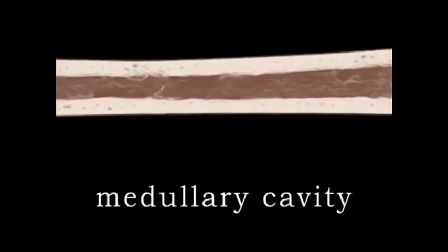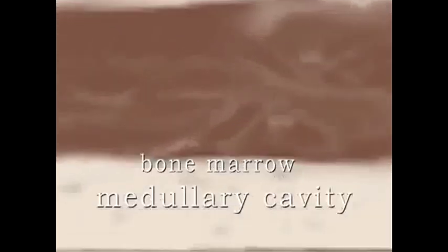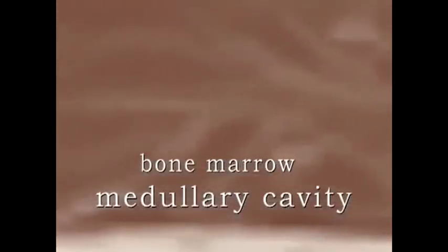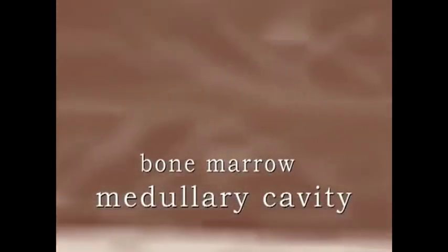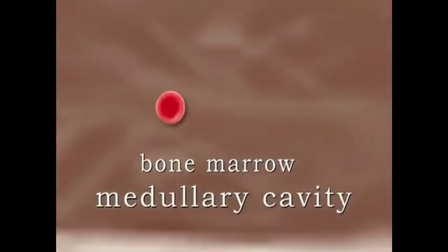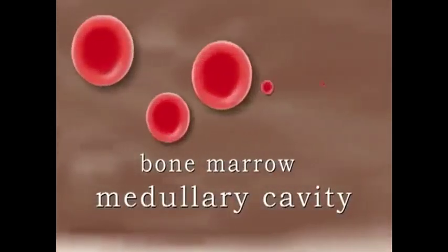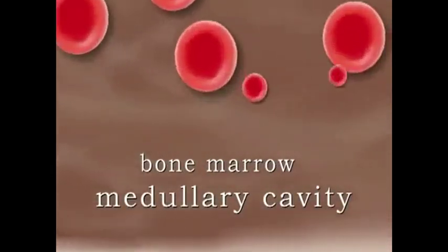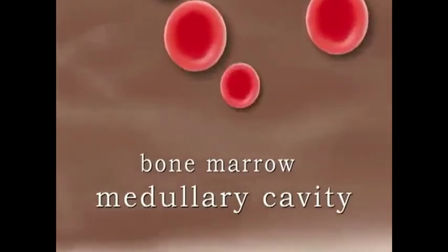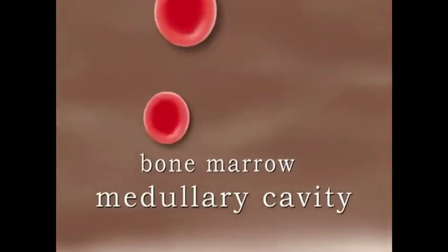Inside the main shaft is a cavity, called the medullary cavity, which contains bone marrow. Bone marrow stores fat, produces blood cells, and plays an important part in the body's immune system.